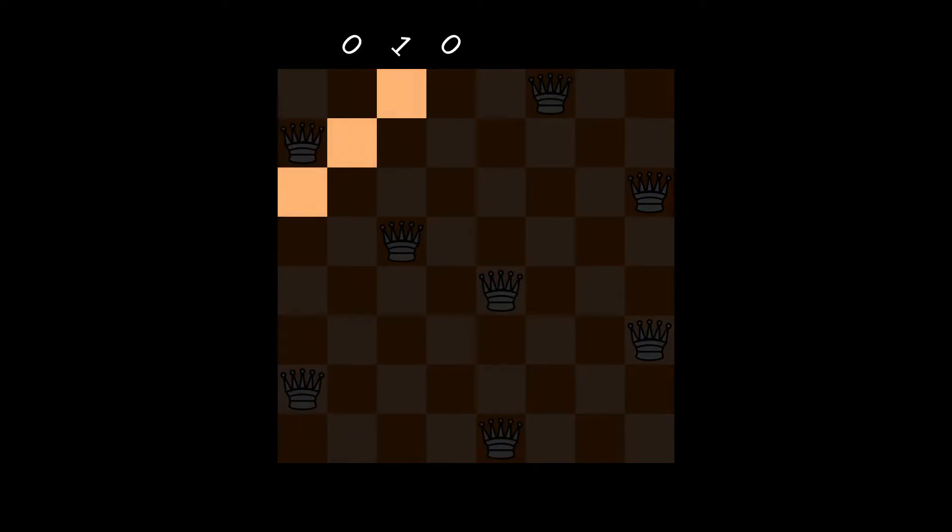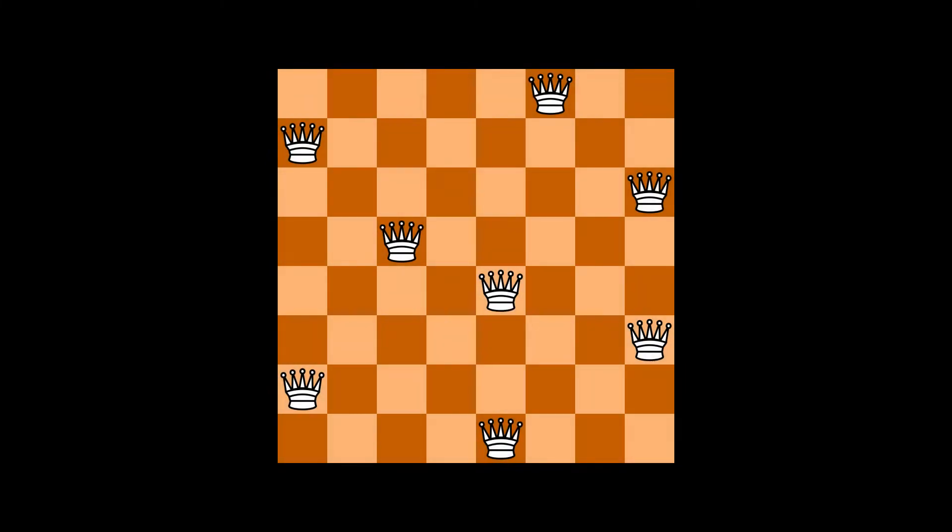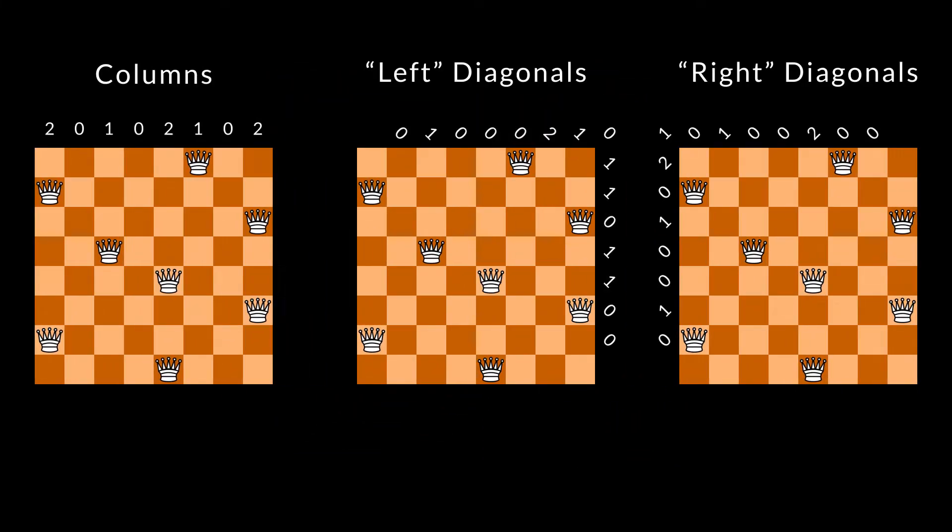Before we try with more queens, let's improve conflict counting even more. Here is the trick. If we store how many queens there are in each column, and in each diagonal, and we keep track of that from state to state, then we can quickly find out how many conflicts a given queen is involved in.